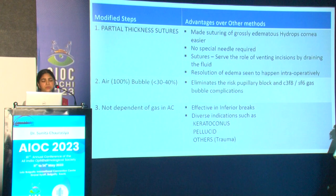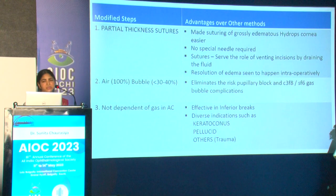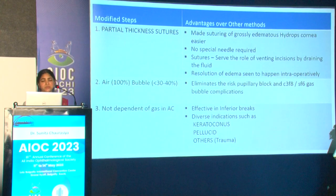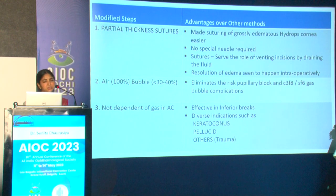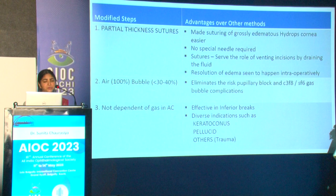Advantages of the modified technique: partial-thickness sutures make suturing of the grossly edematous hydrops cone far easier than through-and-through sutures; no special needle is required; sutures serve as venting incisions draining fluid; edema resolution is seen intraoperatively. Air bubble means 100% air — no C3F8 or SF6 — and bubble size should be less than 30% of anterior chamber volume, eliminating risks of pupillary block and long-term gas complications such as cataract and Urrets-Zavalia syndrome. The technique is not dependent on gas position, making it effective for inferior breaks as well, and applicable to keratoconus, pellucid, and trauma-related hydrops.